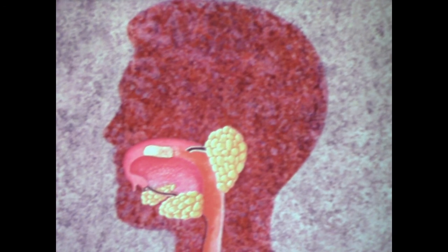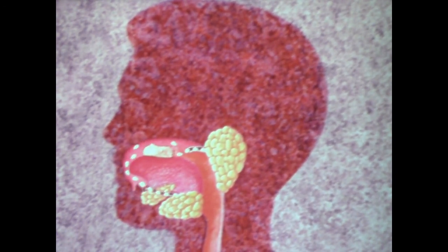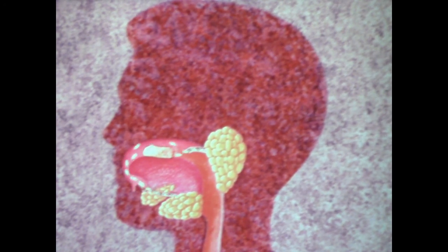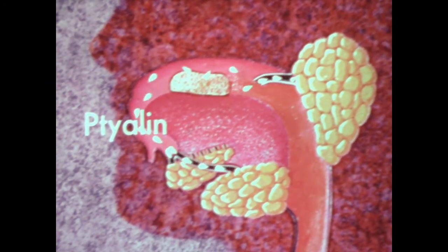At the same time, saliva begins the chemical breakdown of food. This fluid substance, secreted by three pairs of salivary glands, contains a lubricant, mucus, and a digestive enzyme, tyolin.